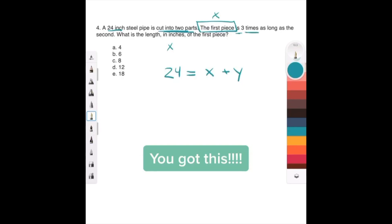x is three times as long as the second. Remember our second variable is y, so x is 3y. It's asking what's the length of the first piece, so we need to solve for x.